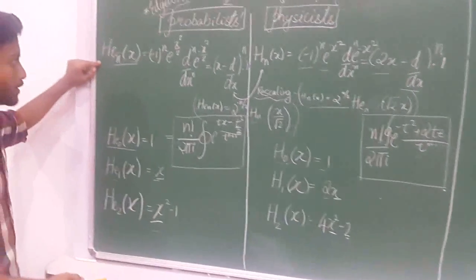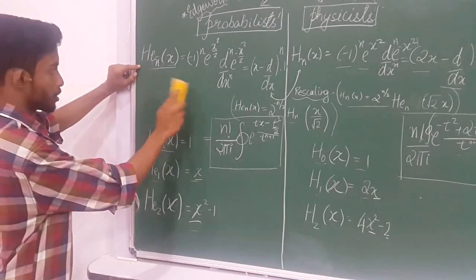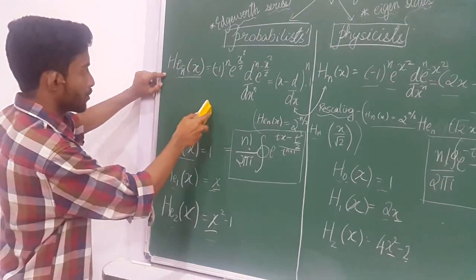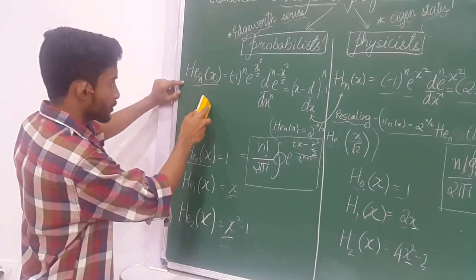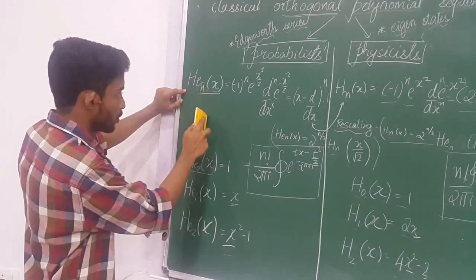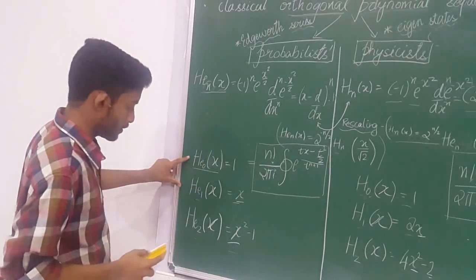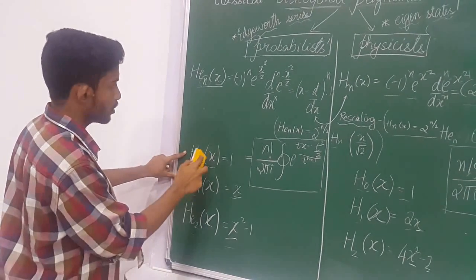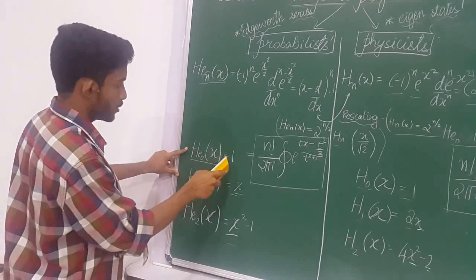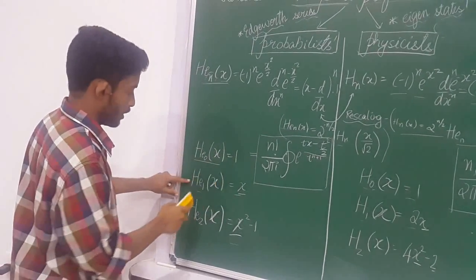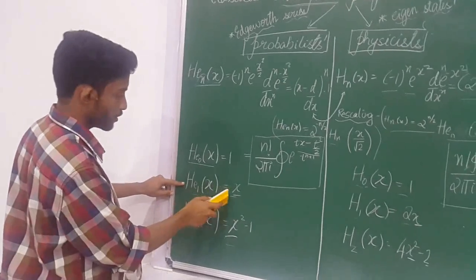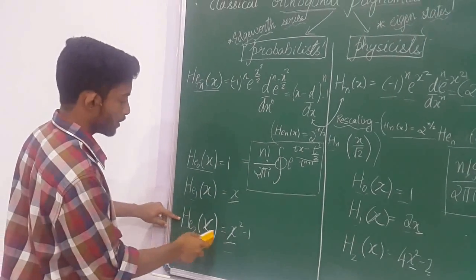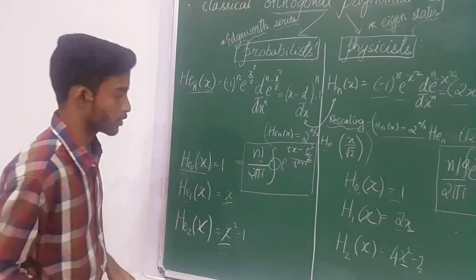On solving the probabilistic Hermite polynomial equation with n = 0, n = 1, and n = 2, we get: H_e0(x) = 1, H_e1(x) = x, and H_e2(x) = x² - 1.